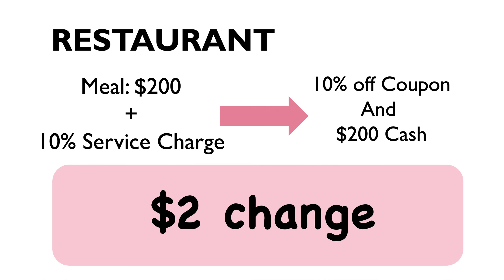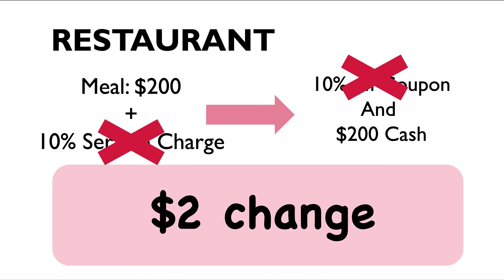You actually need to get back $2 change. The reason is that the 10% service charge and the 10% off coupon cannot cancel each other out. If we do a deeper calculation, after the 10% service charge we multiply the total by $0.9, we get $198, which means $200 minus $198 equals a $2 change.